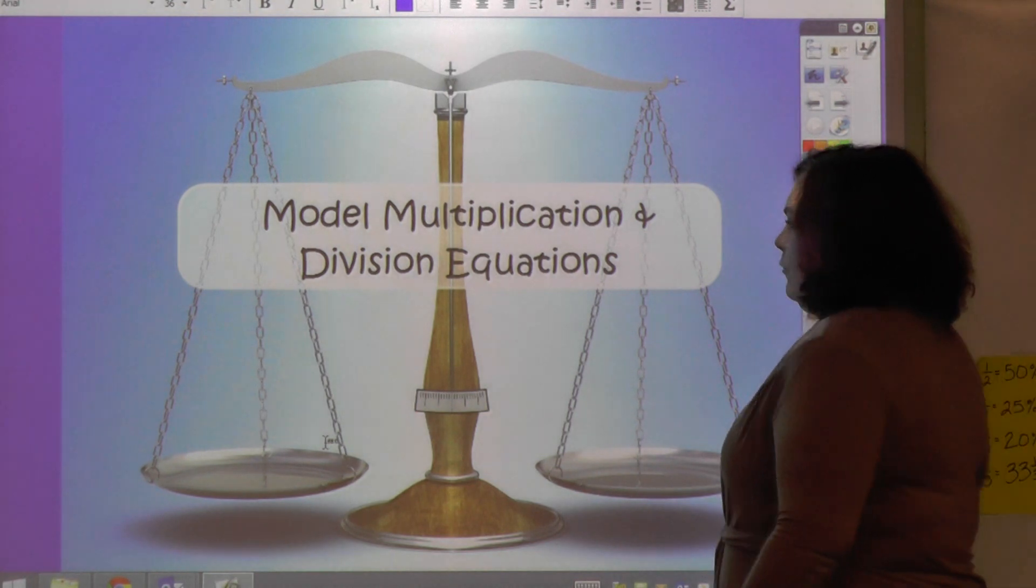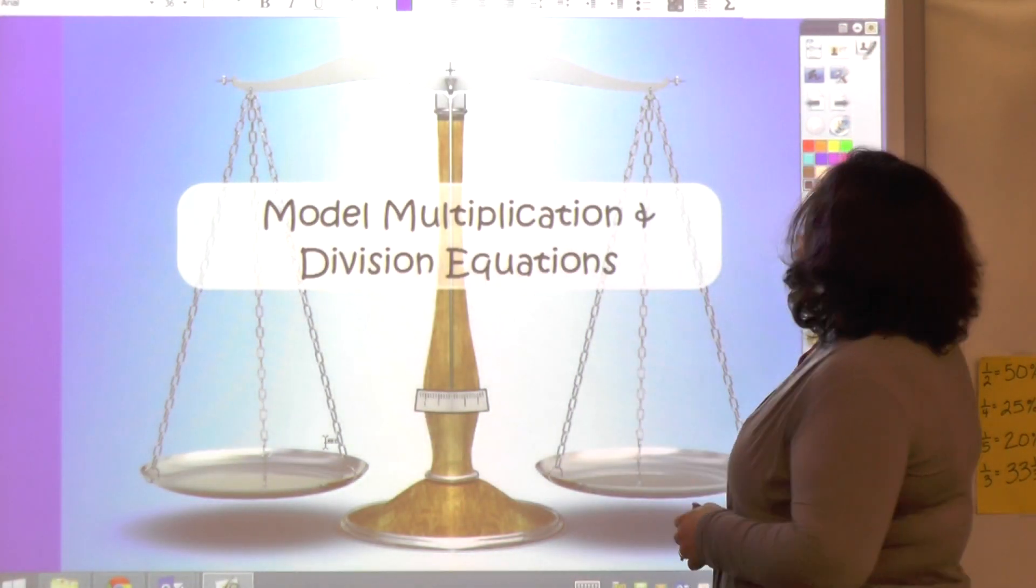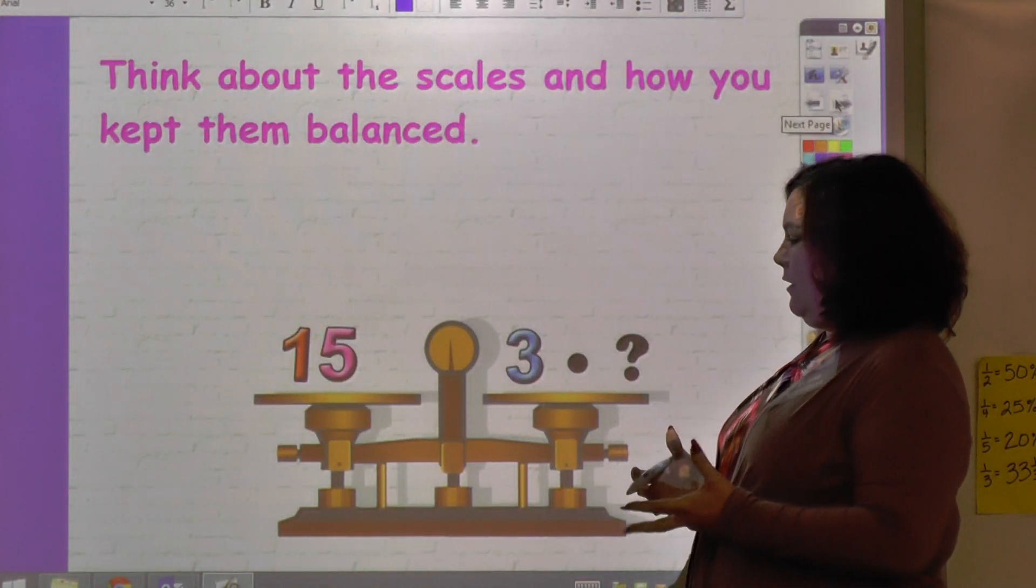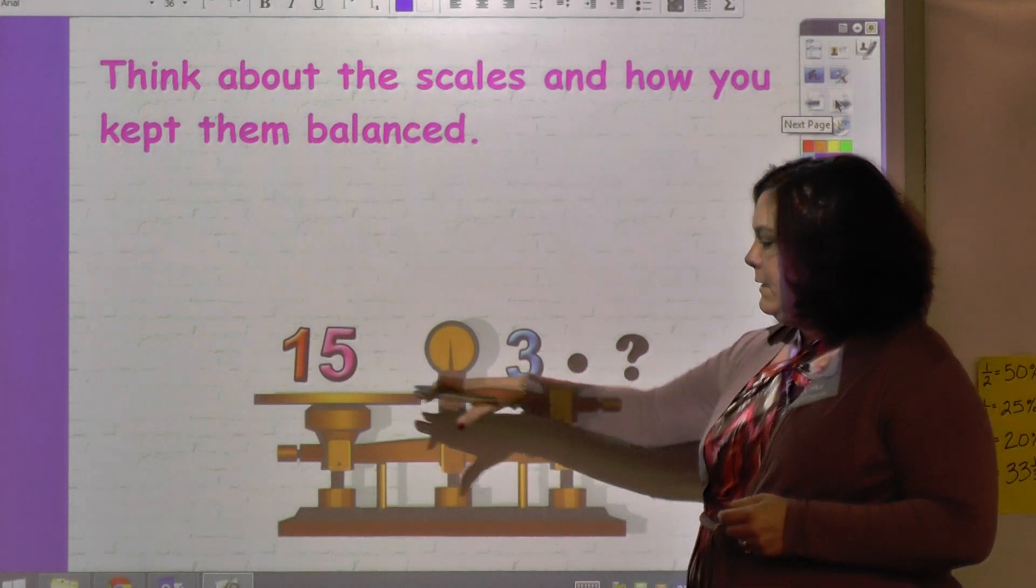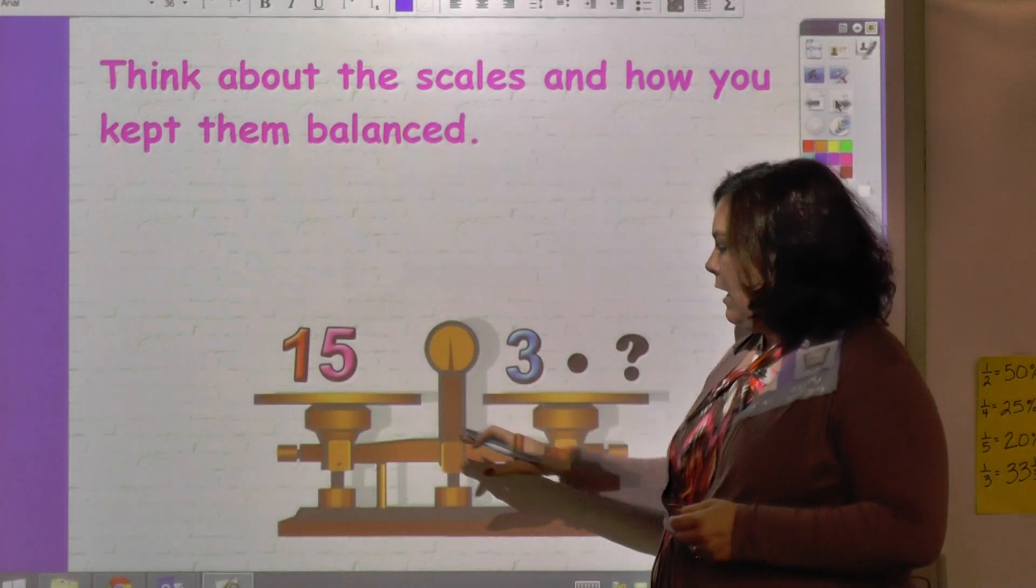Today we're talking about modeling multiplication and division equations. Think about the scales we talked about with addition and subtraction, and you're wanting to balance it out. If 15 is on this side and 3 and something else on this side, what would balance it out?